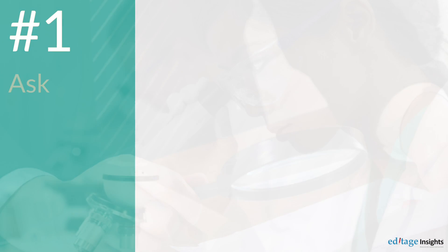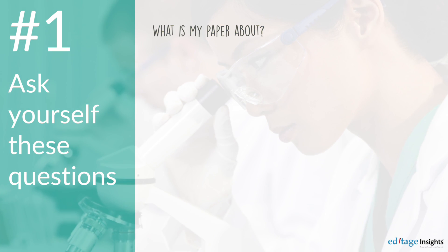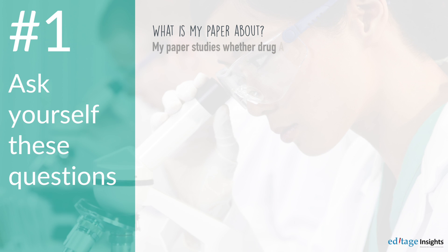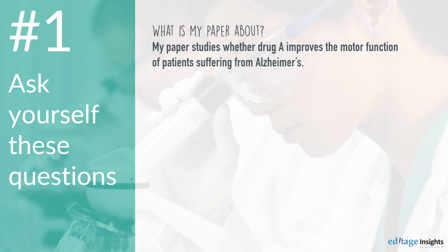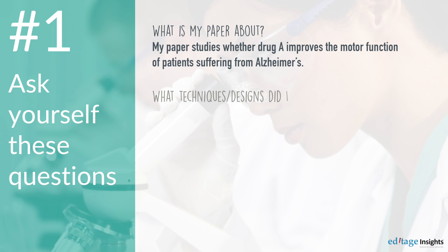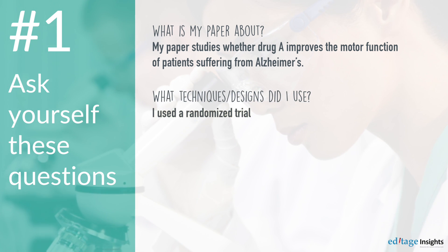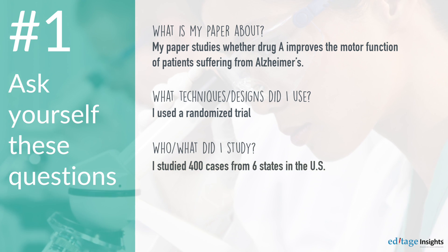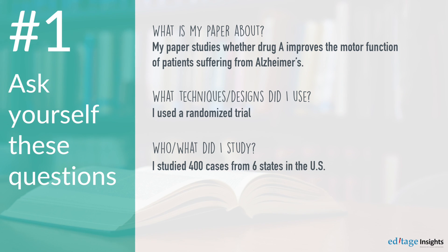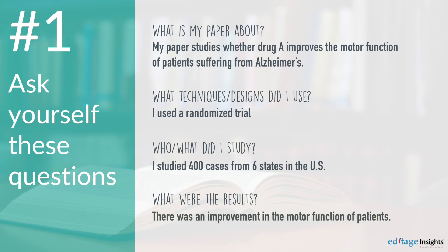Step 1. Ask yourself these questions. What is my paper about? For example, my paper studies whether Drug A improves the motor function of patients suffering from Alzheimer's. What technique or design did I use? I used a randomized trial. Who or what did I study? I studied 400 cases from 6 states in the U.S. And, what were the results? There was an improvement in the motor function of patients.